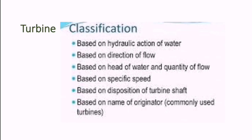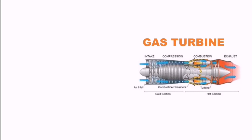The classification of turbines is based on: hydraulic action of water, direction of flow, head of water and quantity of flow, specific speed, disposition of turbine shaft, and name of originator or commonly used turbines. These are all the classifications of turbines.